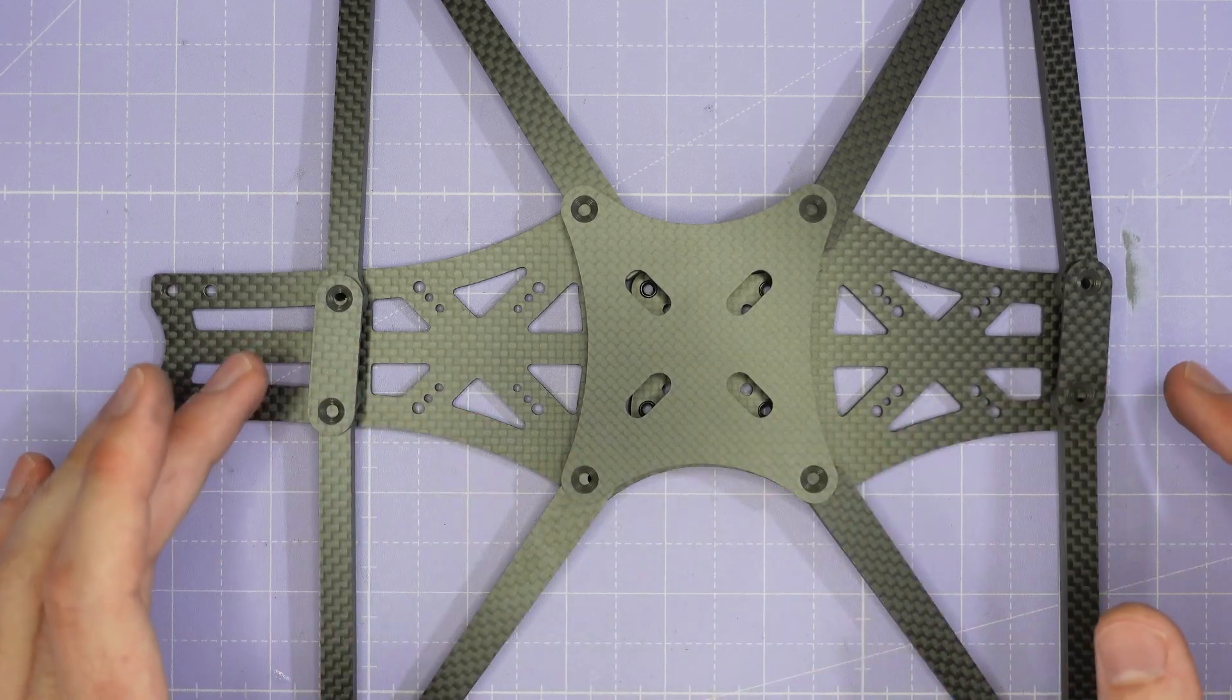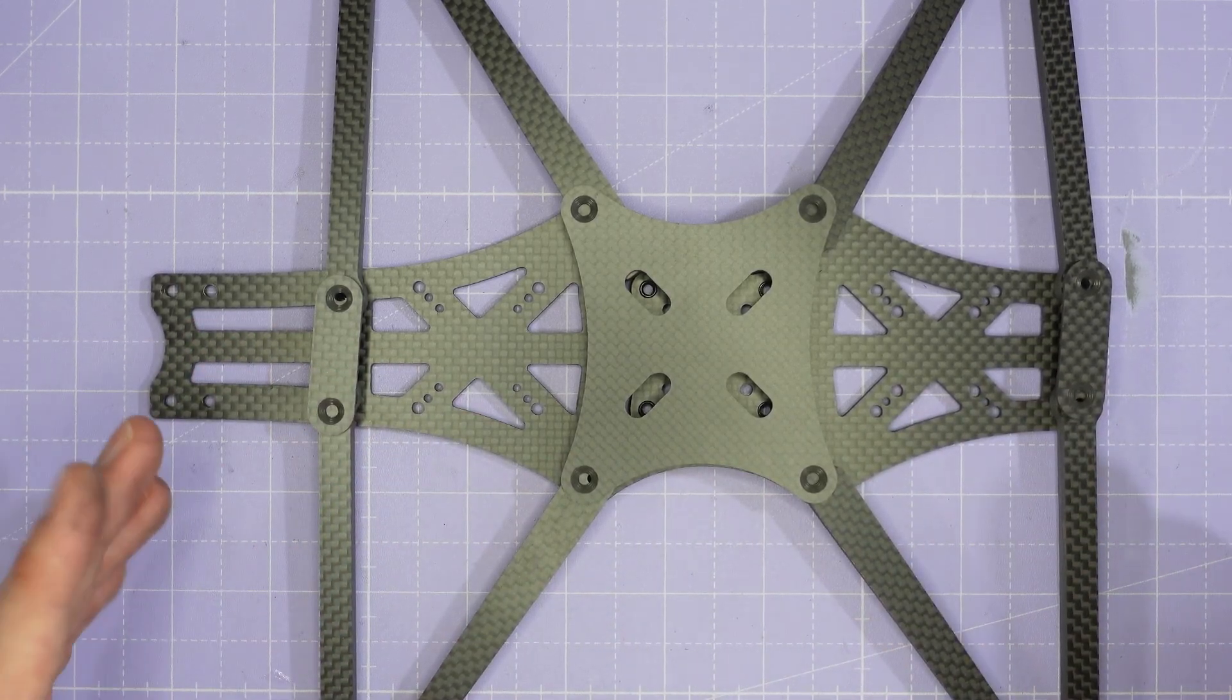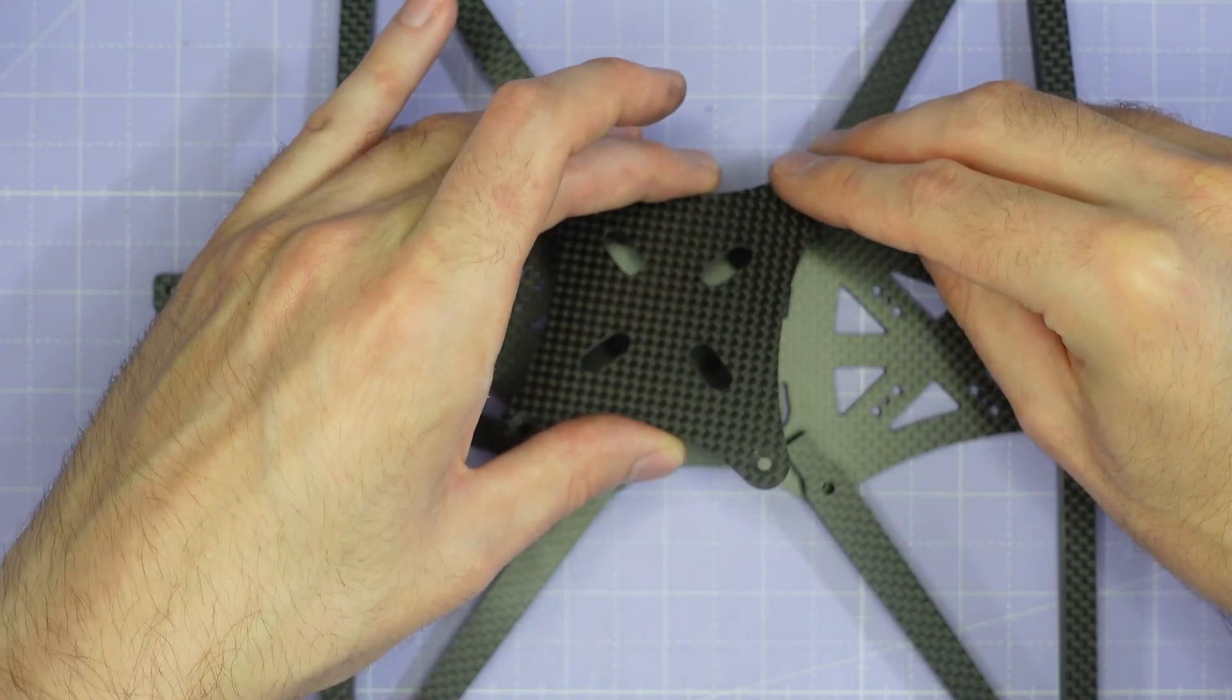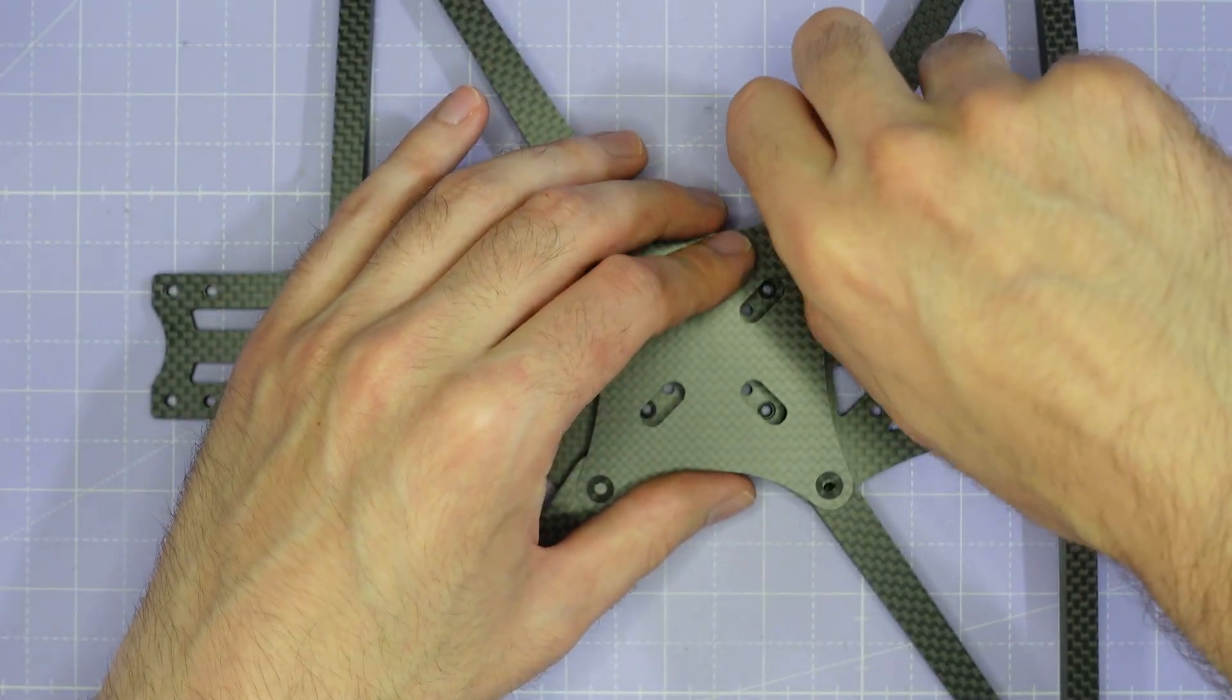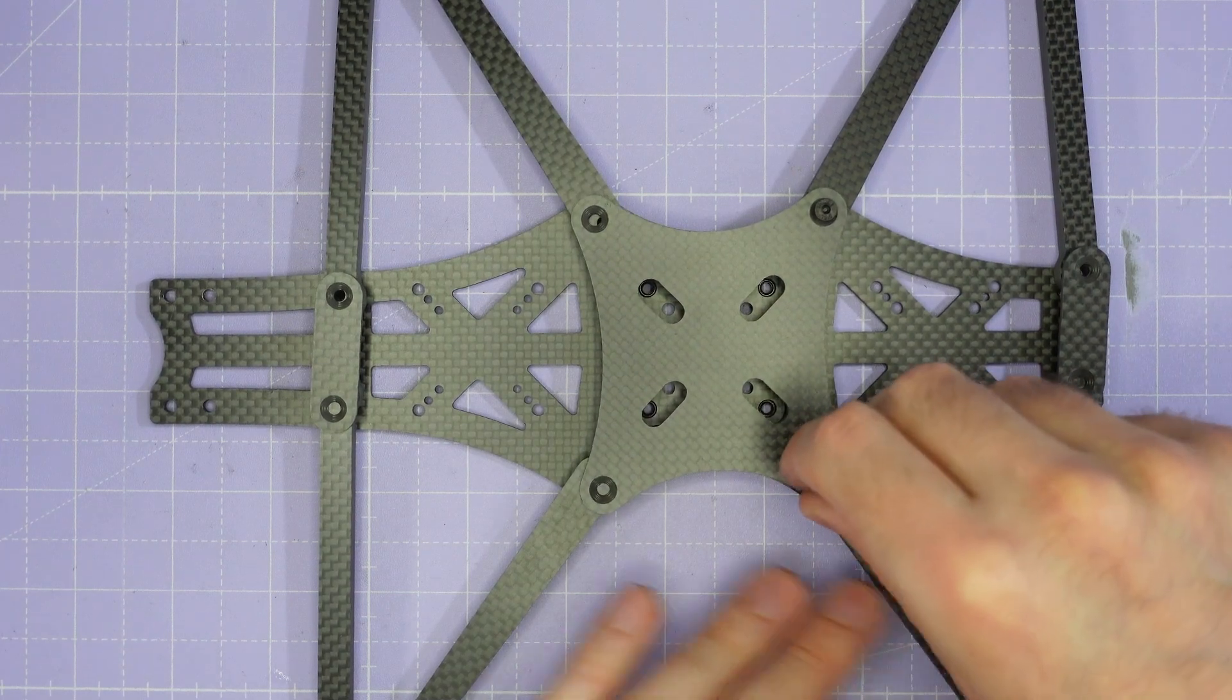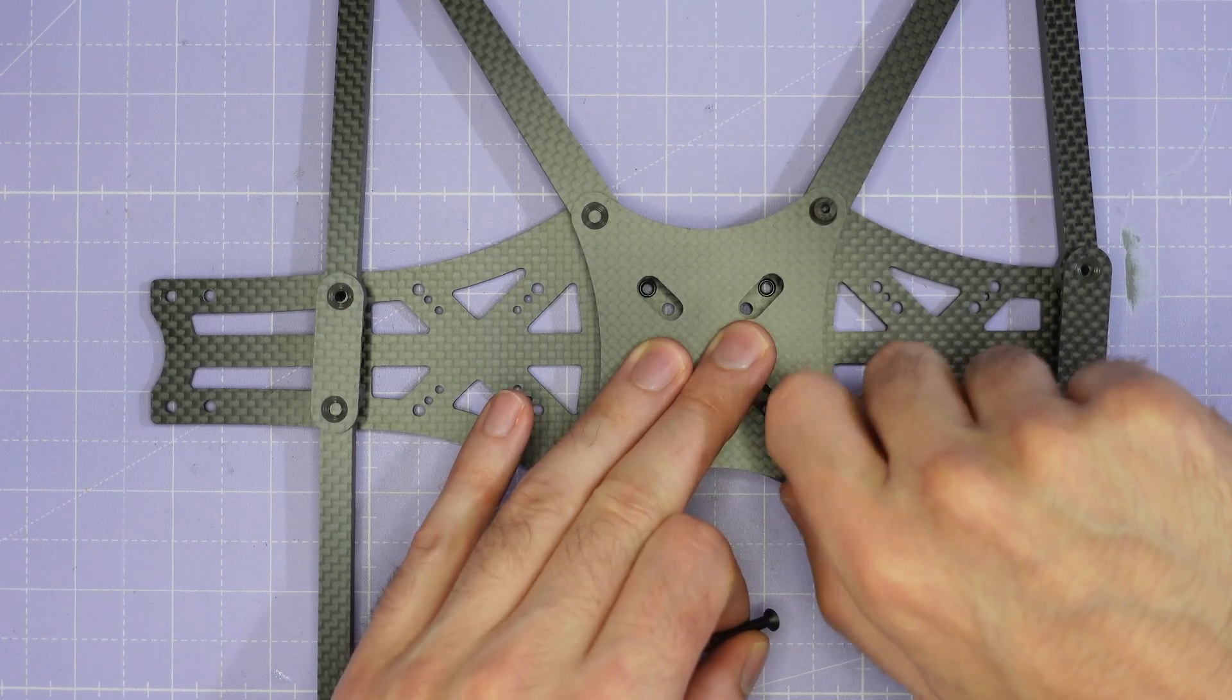Once you have all the carbon parts positioned correctly you can go ahead and secure them together using eight M3 by 20 millimeter countersunk screws. You're going to want to pass the screw through the brace plate through the arm and then down into the press nut and just do it up finger tight just to secure it in place. If you do that for all of the screws that will have the whole frame secured nicely together and then we can tighten them up.